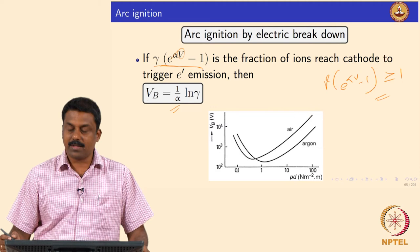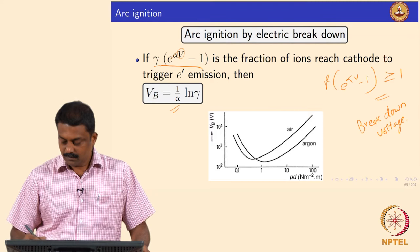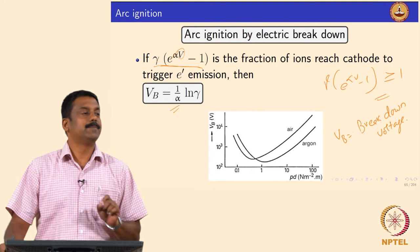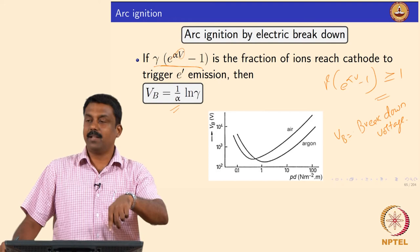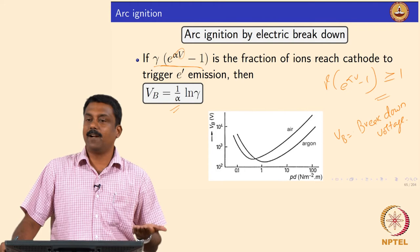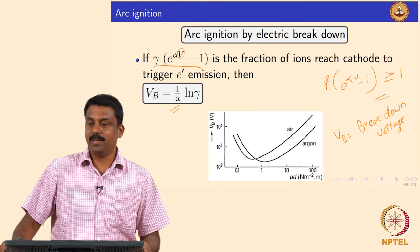The condition is that α·V − 1 must always be greater than 1 to trigger electron emission from the cathode. Solving this equation gives the breakdown voltage VB — the minimum voltage you need to apply to ignite the arc. If you want to ignite an arc without physical contact between the cathode and anode, you need to apply this breakdown voltage to trigger the ignition.